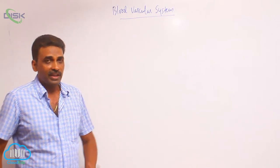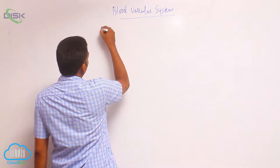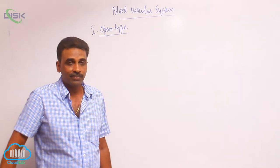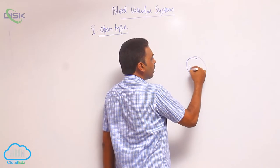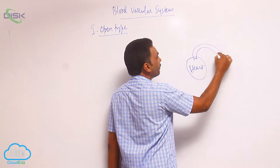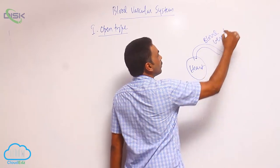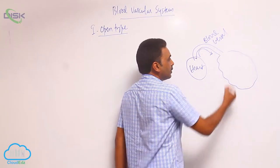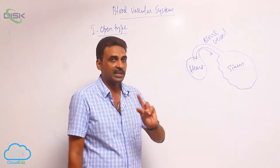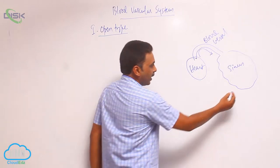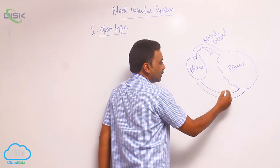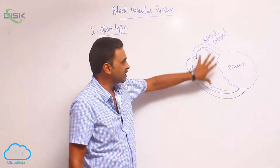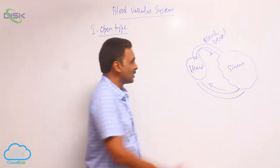In the blood vascular system, we have two basic plans. One is the open type. In the open type, the pumping organ called the heart pumps blood through blood vessels into sinuses — sinuses being empty spaces, one or many. Again, through other blood vessels, the blood is brought back to the heart.